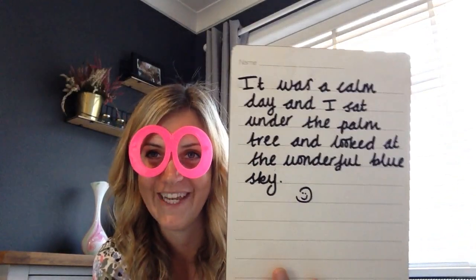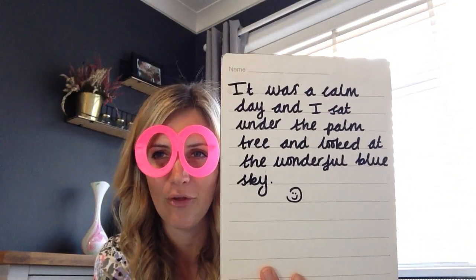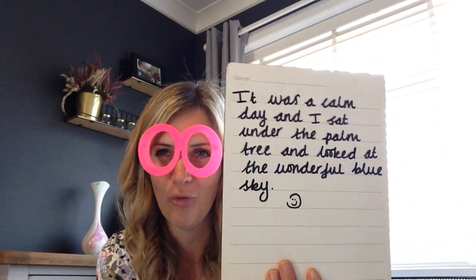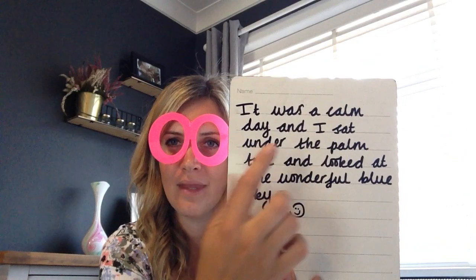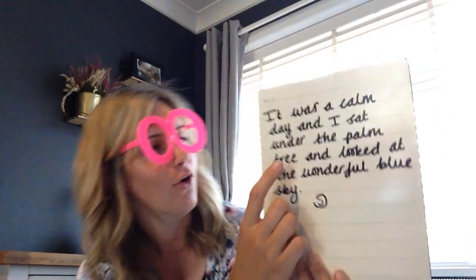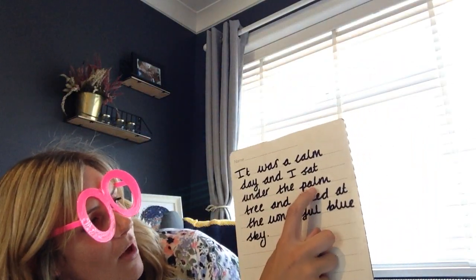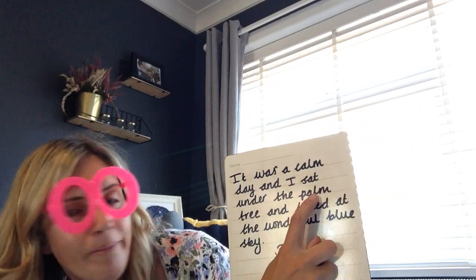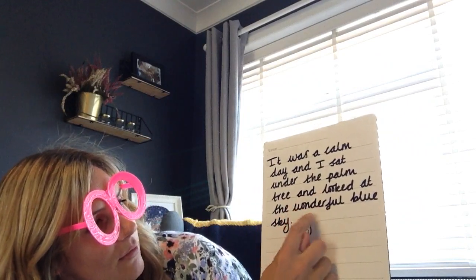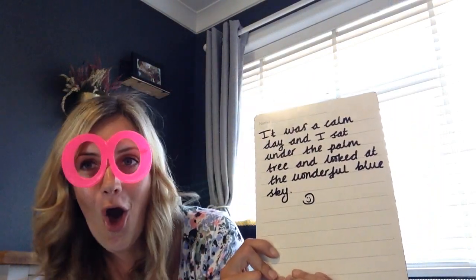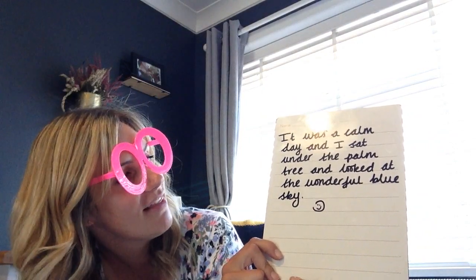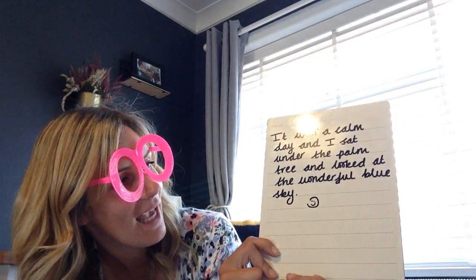Well done everybody. Now let's see if we can spot those R sounds in the words before we read it. So we've got R as in palm — so R as in calm. And we've got R as in palm. And that's it in this one. So hopefully you've read: it was a calm day and I sat under the palm tree and looked at the wonderful blue sky.